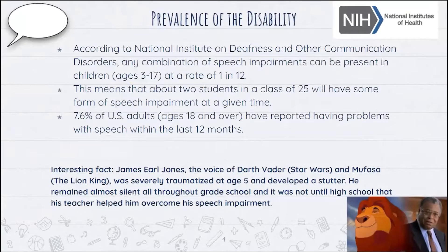Looking at the prevalence of the disability, according to the National Institute on Deafness and Other Communication Disorders, any combination of speech impairments can be present in children between the ages of 3 and 17, and that rate is 1 in 12. For educators, in a classroom of 25, you're likely to see at least two students at any given time that have some form of a speech impairment.